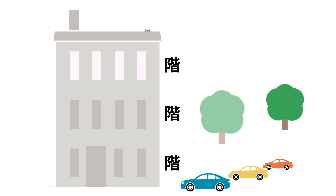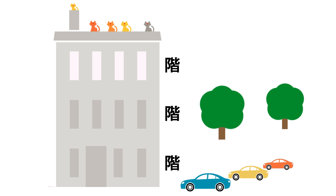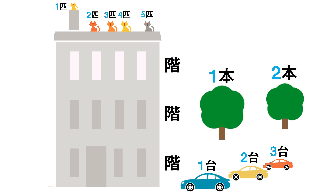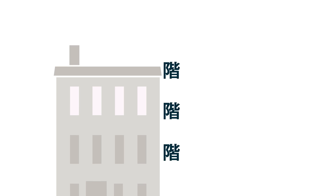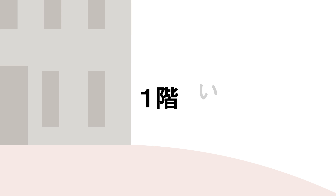This is a counter for floors. When counting objects in Japanese, you'll add a counter word after the number. There are many different counters for different objects, but the counter for floors in a building is this. Here are a few examples.